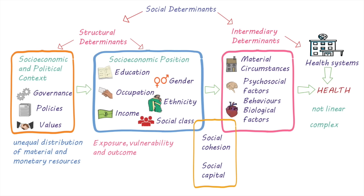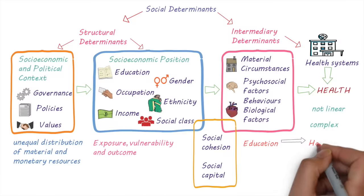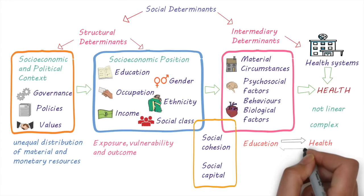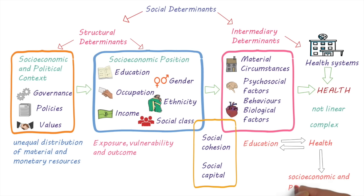For example, poor income and education can impact health, and also poor health can limit opportunities for people to participate in the workforce or receive education. Also, if a population is affected by a lot of disease, it can have a broader impact on the socio-economic and political context.